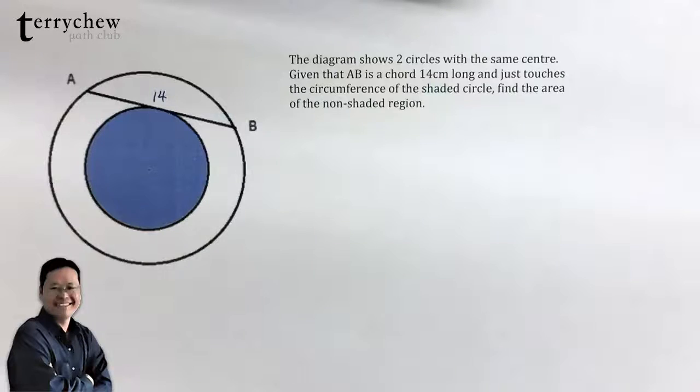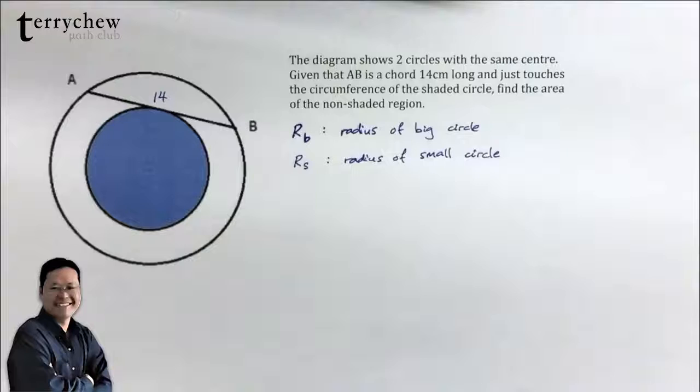Recall that the area of the circle is pi times radius squared. So let RB denote the radius of the big circle and let RS denote the radius of the small circle.